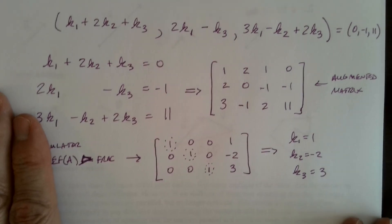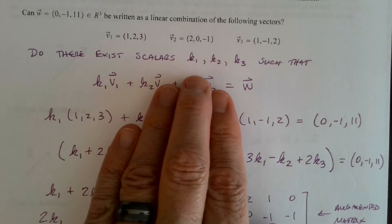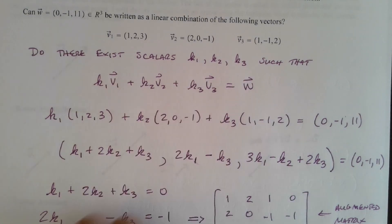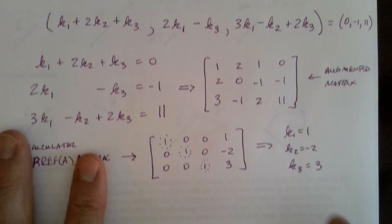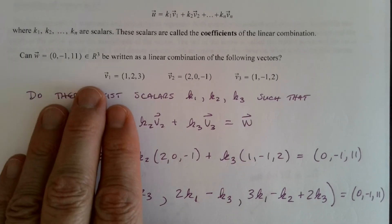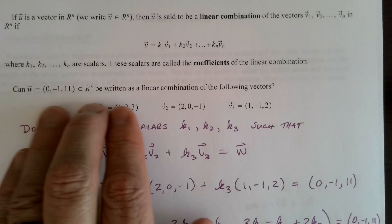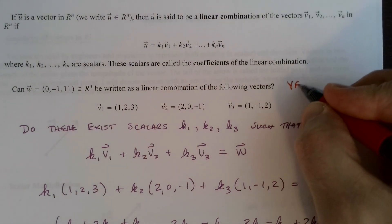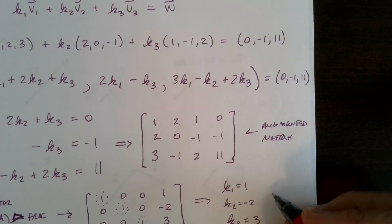So let's go back up. What was the original question? Do there exist scalars K1, K2, K3 such that this is true? Do there exist such scalars? Yes. And if there exist such scalars, then what do we say here to this question? Can this vector be written as a linear combination of the following vectors? Yes, we can say now. We can answer the question because of what we have down here.